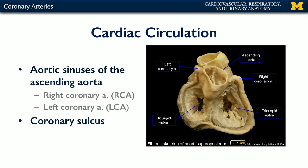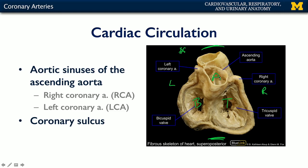This is a fairly unusual view of the heart. What you're looking at here is a superior posterior view — a little above and a little behind — of the heart with the atria removed. So this is anterior, this is posterior, this is left, and this is right. We can see a couple of valves here: the tricuspid valve, the bicuspid valve, the semilunar aortic valve, and the semilunar pulmonary valve.